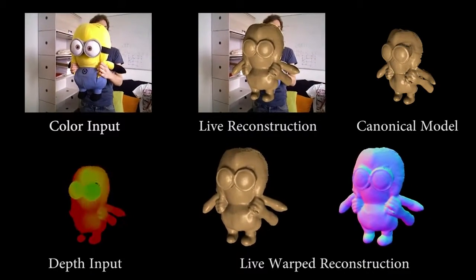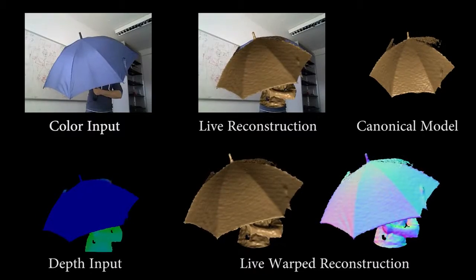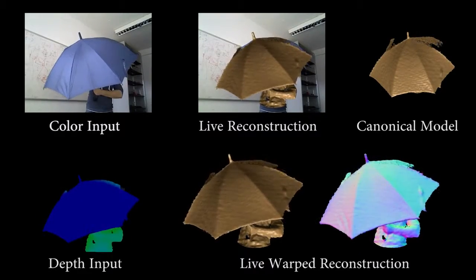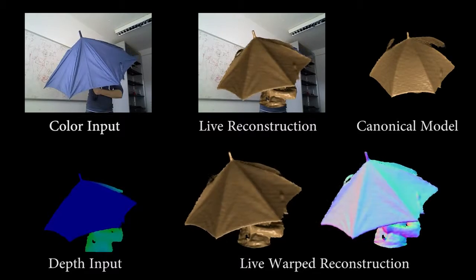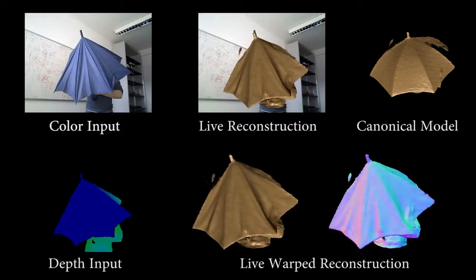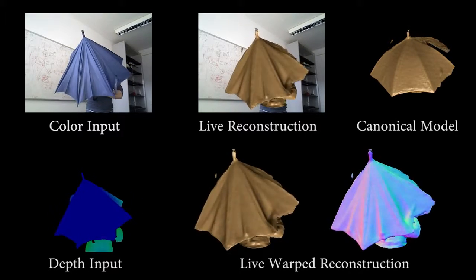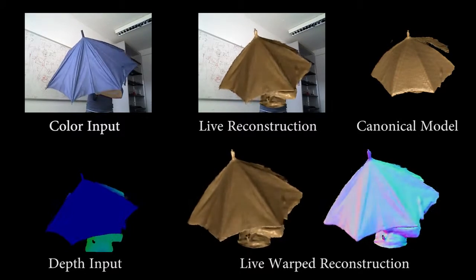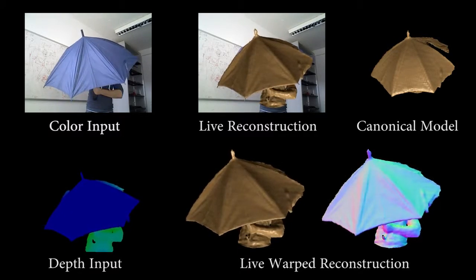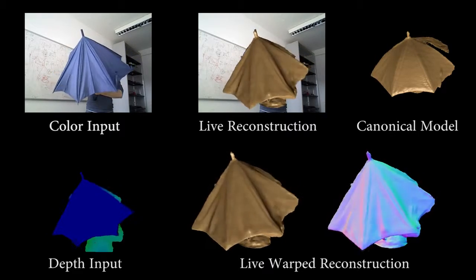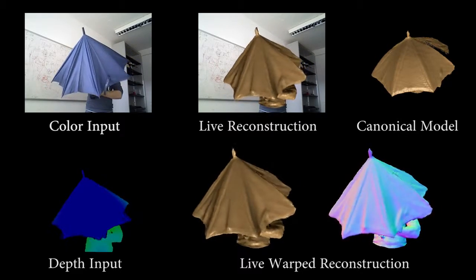As shown in the upper right, the canonical model is incrementally constructed while a user is deforming and scanning the object. The depth input is fused into a volumetric signed-distance field, which is warped to fit the current input.